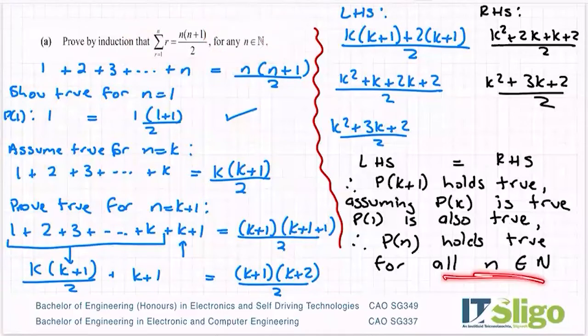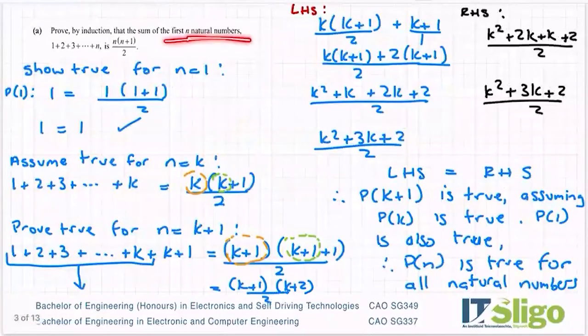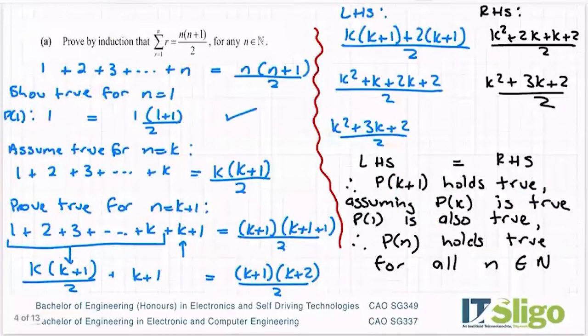So you can see I gave it in maths language in this question because they gave it to me in maths language. When I did it a few minutes ago, they said the first n natural numbers. I just wrote it that way. So it doesn't matter which way you give your conclusion as long as it's generally in this form. So watch out for the sigma notation piece.